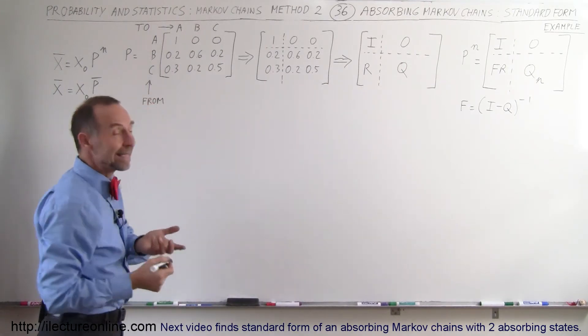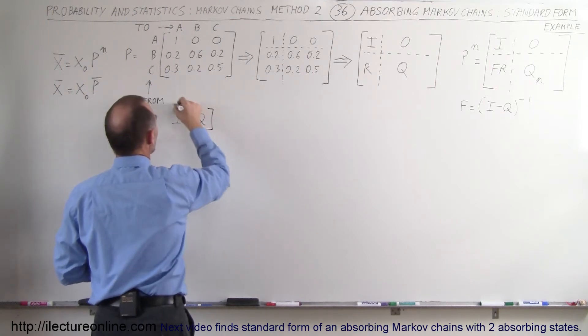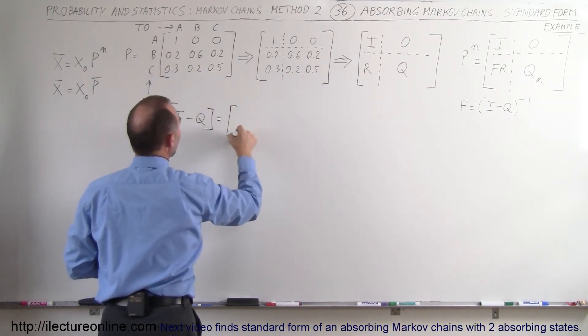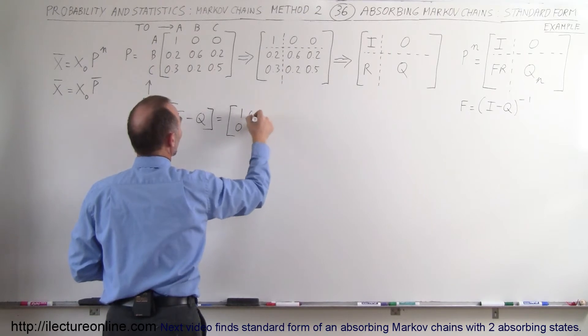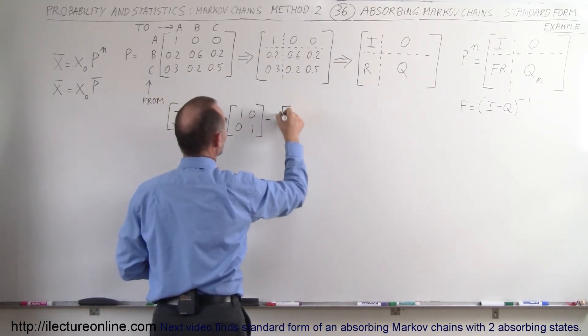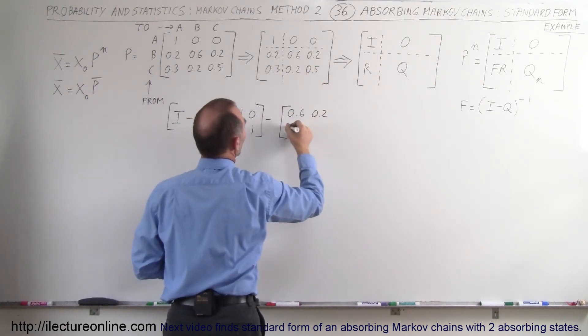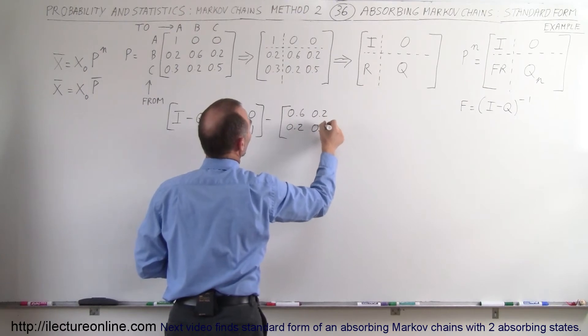So first of all we're going to take I minus Q. I minus Q can be found by saying the I matrix which is the one, one across the diagonal, zeros everywhere else, and we're going to subtract from that the Q matrix which is this matrix right here: 0.6, 0.2, 0.2, and 0.5.